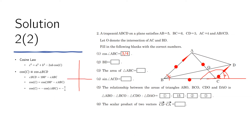We can see this from the unit circle definition of cosine — cosine is the x-component of the unit radius. If the original angle gives a positive x-component, then 180 minus that angle gives a negative x-component. So cosine of C is negative 3/4. Now we just plug all the values into the cosine law equation.